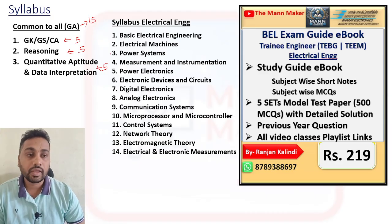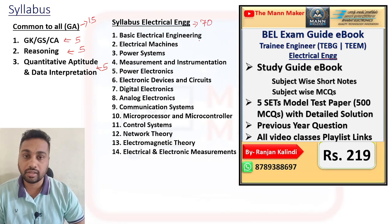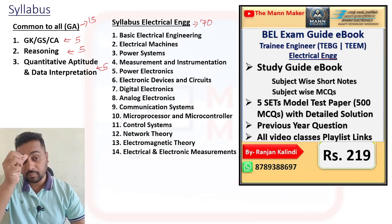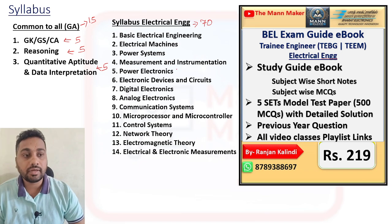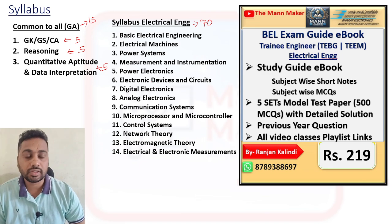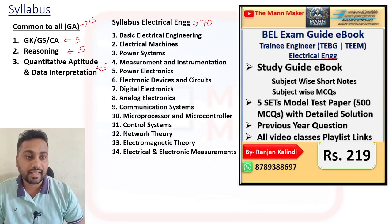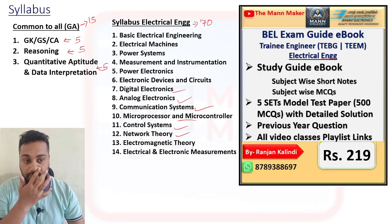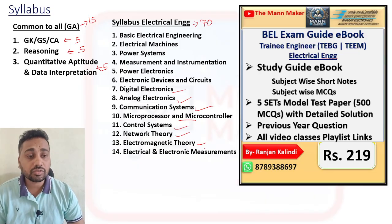Your technical syllabus belongs to 70 marks. 70 questions you are going to get from these topics: basic electrical engineering, electrical machines, power systems, measurement and instrumentation, power electronics, electronics devices and circuits, digital electronics, analog electronics, communication systems, microprocessor and microcontroller, control systems, networking, network theory, and electromagnetic theory.